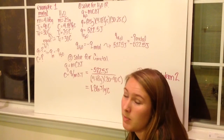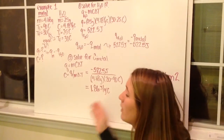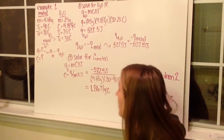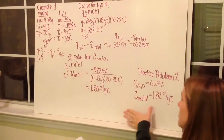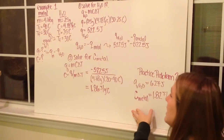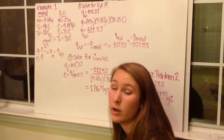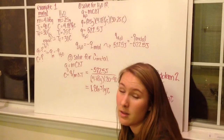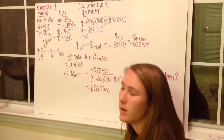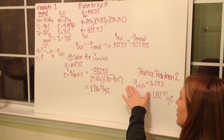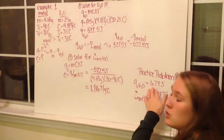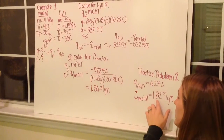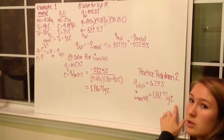Specific heats must always be positive. For the practice problem, following the same setup — using the water equation first, then the metal's information — you should get a heat of water of 627 joules, and therefore a specific heat of the metal of 1.82 joules per gram degrees Celsius.